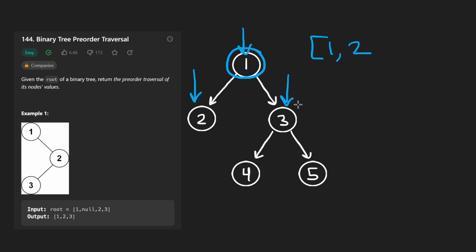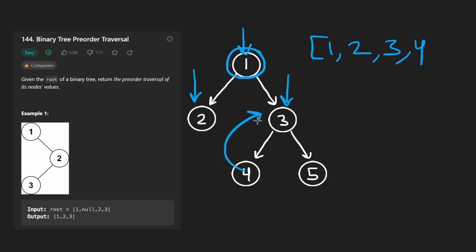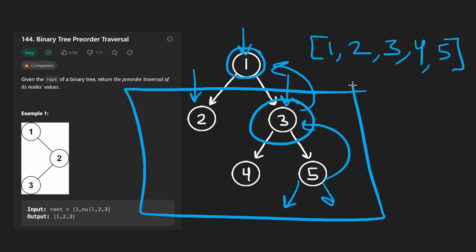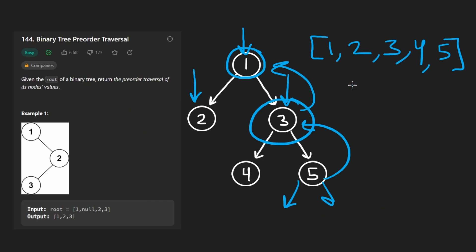So then we'd recursively run pre-order traversal on the right subtree. We'd get to three and add three to the output. Then we'd go left, add four to the output. Try to go left — can't. Try to go right — can't. Pop back up. Then pop back up. Then try to go right — we'd add five to the output. At this point we can't go left or right, so we'd pop back up. We're done there because we already went to both sides. Then pop back up and we're done because we already did the left and right subtree. So how do we take this solution and emulate it iteratively?